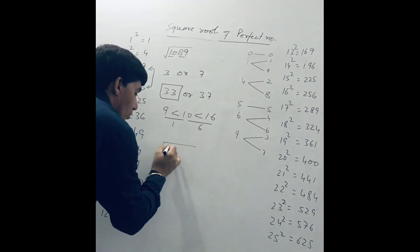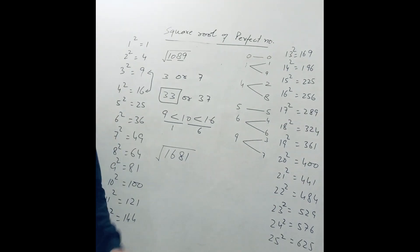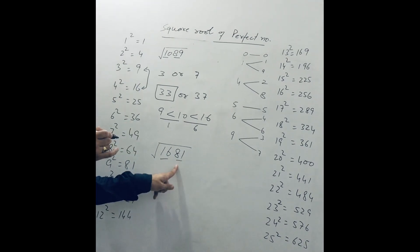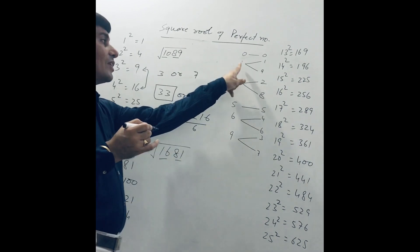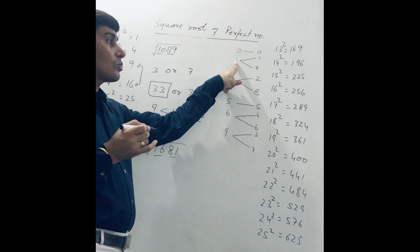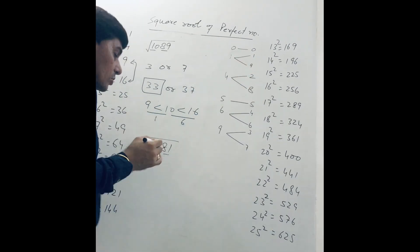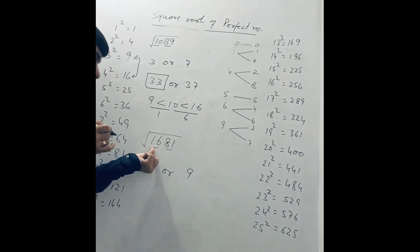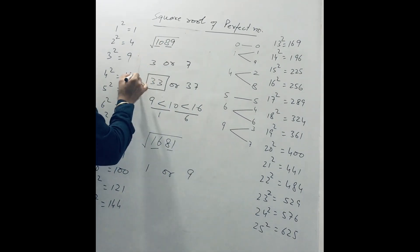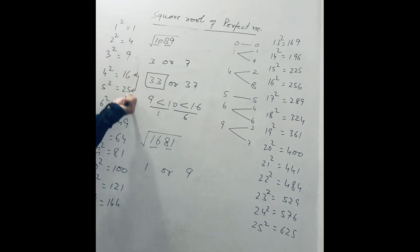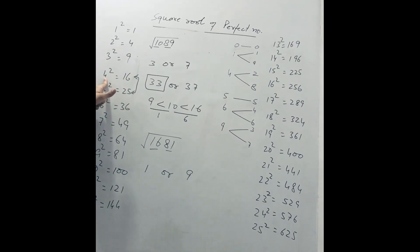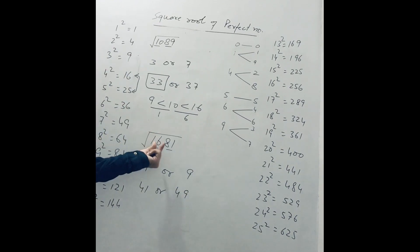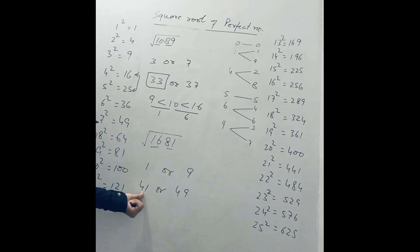Find the square root of 1681. Same process — pairing the number: 81 is the pair. The unit place is 1. When the unit place is 1, after finding the square root, the unit place may be 1 or 9. So we write 1 or 9. In the next step: 16. We see 16 lies between 16 and 25, so the lowest value is 4² . We write 4, 1 or 4, 9 — meaning the square root of 1681 is either 41 or 49.